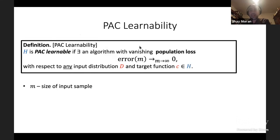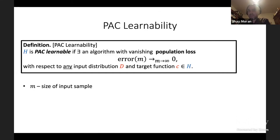We say that class H is PAC learnable if there exists an algorithm whose population loss vanishes as the number of examples goes to infinity, and this should happen at a uniform rate over all possible distributions D.